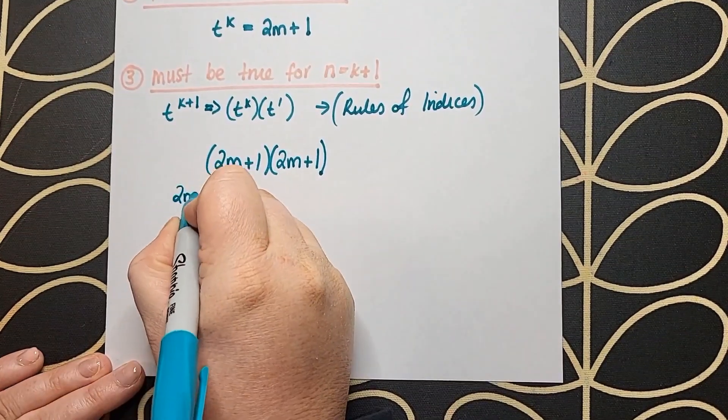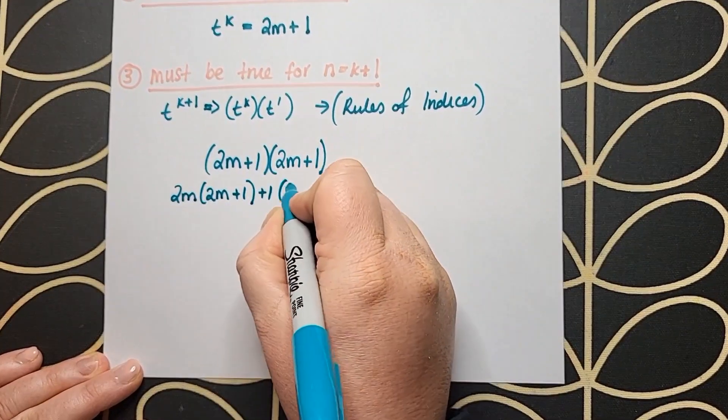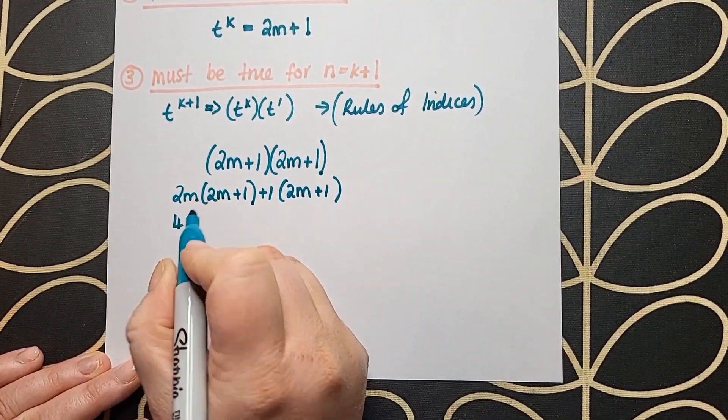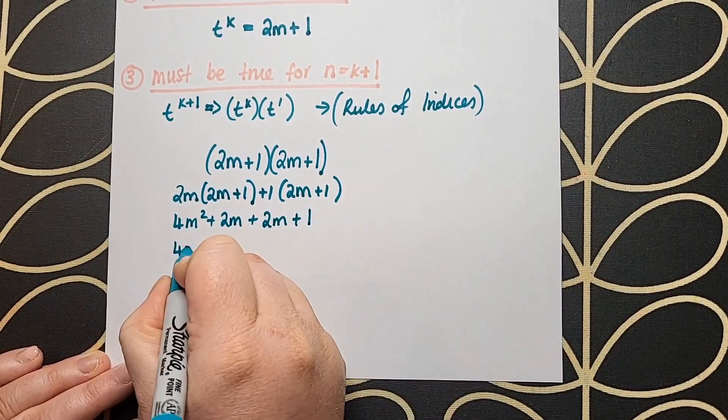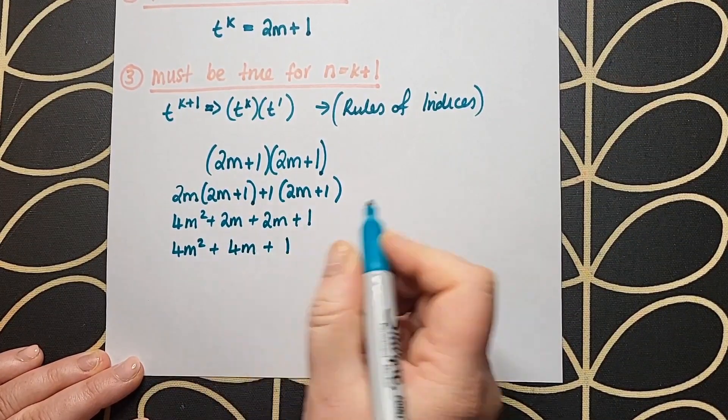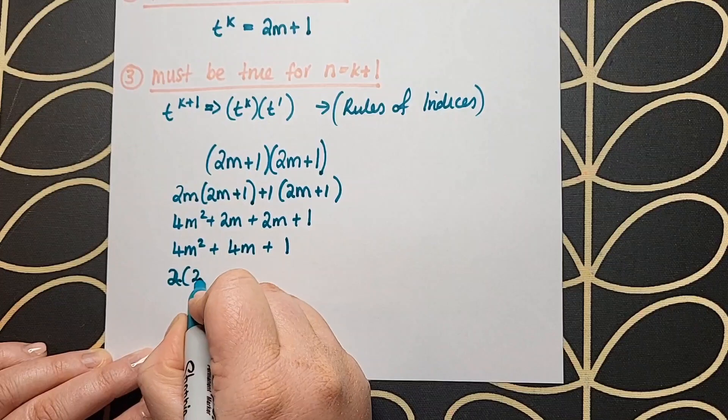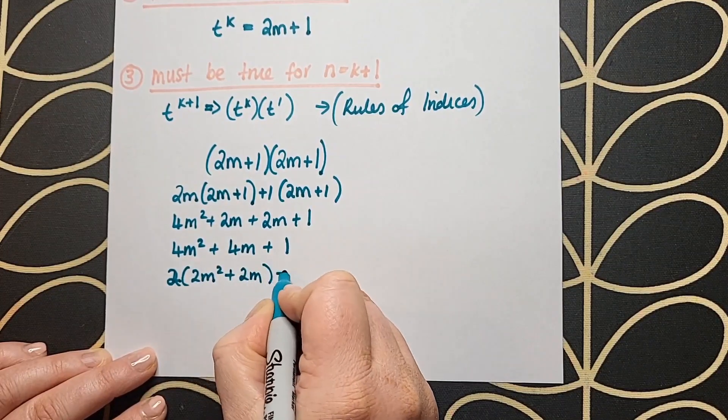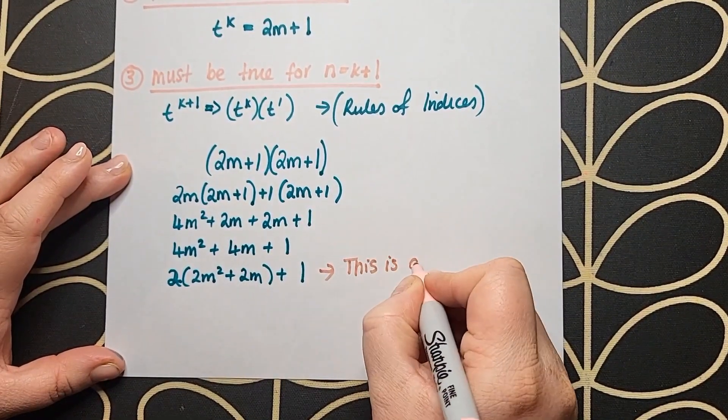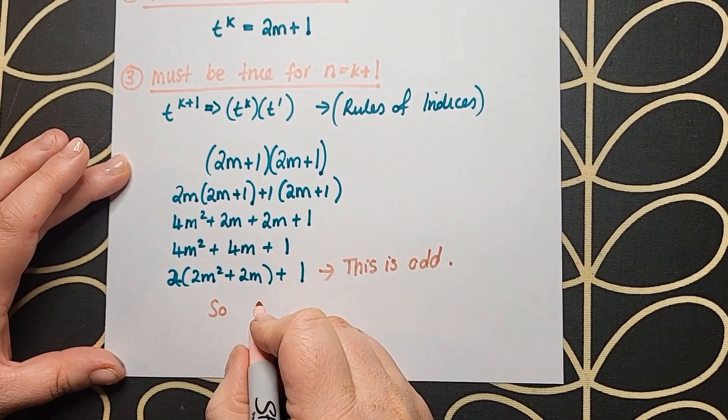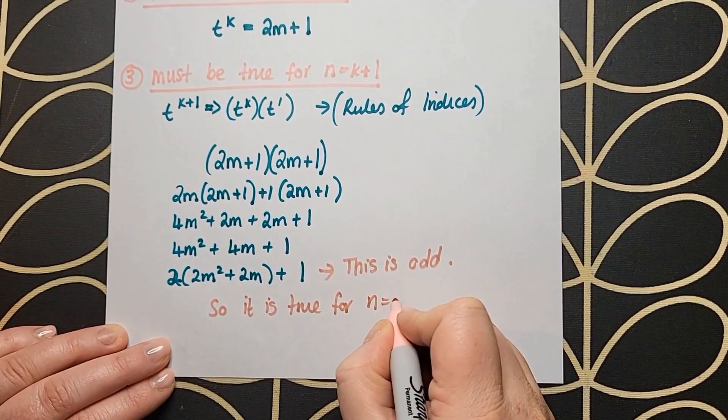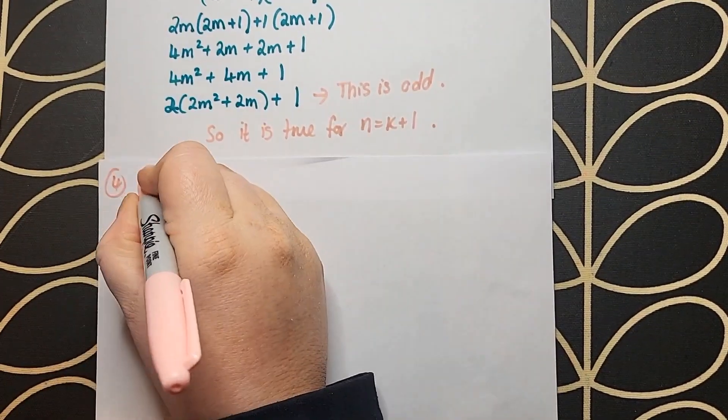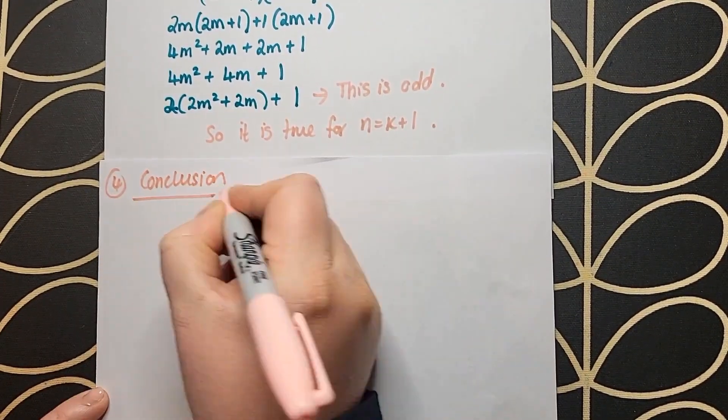t to the power of k is equal to 2m plus 1 as we've seen in part 2, and t to the power of 1 is equal to 2m plus 1 as we've seen in step 1. I multiply them out, and I get 4m squared plus 4m plus 1. I do similar to what I did before. I factorize out 2 out of the first two terms, and I can show definitively that that is odd. So yes, it is true for n equals k plus 1.